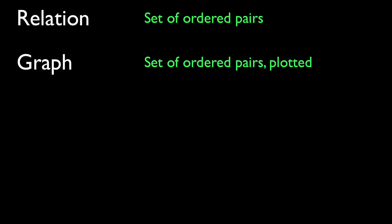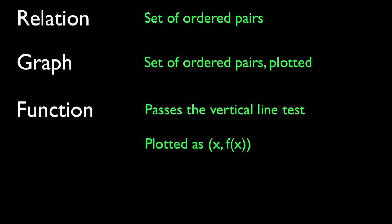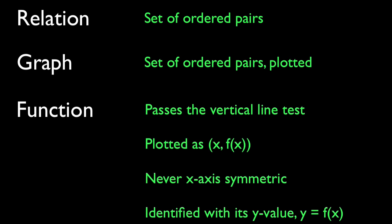And now for some good words in closing. Remember that a relation is just a set of ordered pairs, and a graph is a set of ordered pairs plotted. A function must pass the vertical line test. It's plotted as the ordered pair x, f of x. It's never x-axis symmetric unless it is the x-axis, and even though it's really a set of ordered pairs, we identify it with its y value by thinking of y as f of x.